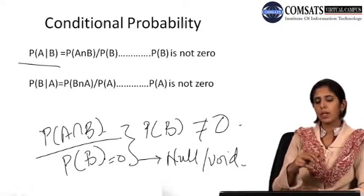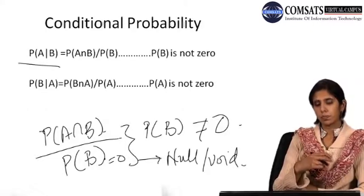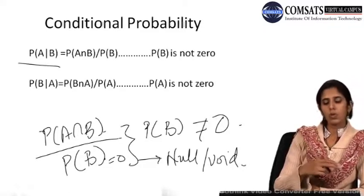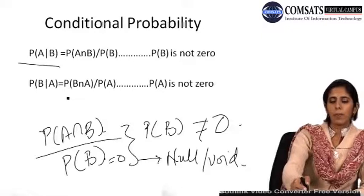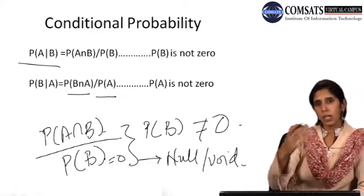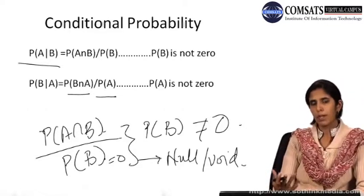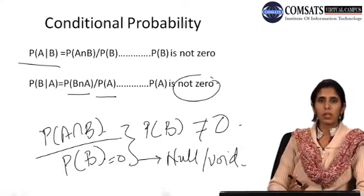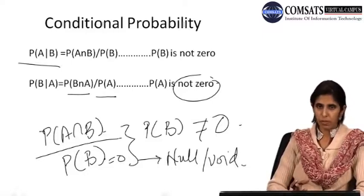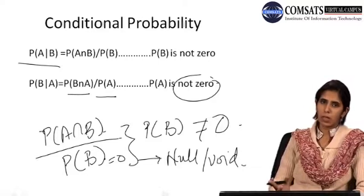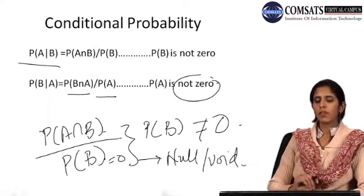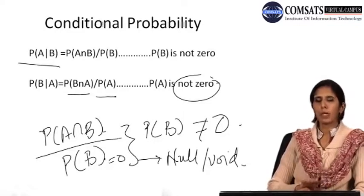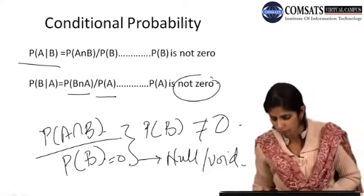The condition applied is that probability of A intersection B will be considered where probability of B is not equal to zero. Similarly, the probability of B given A equals probability of B intersection A divided by probability of A. This is a non-zero numeric which gives weightage to the numerator — if it becomes zero, the entire statement holds no meaning and remains undefined. So in summary: P(A|B) = P(A∩B) / P(B), and P(B|A) = P(B∩A) / P(A).